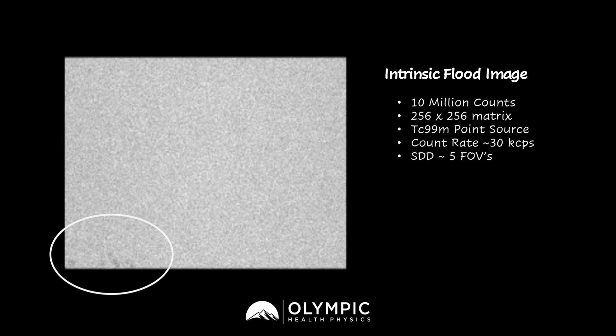This is a fairly nondescript artifact. It doesn't have very defined or geometric shapes to it, so we can rule out things like PM tubes. The next step in diagnosing the problem with this system is to do off-peak images. Off-peak images allow us to evaluate the gamma camera for things like PM tube imbalance or PM tube decoupling.